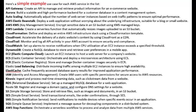Here's a simple example use case for each AWS service in the list. API Gateway: create an API to manage and retrieve product information for an e-commerce website. Aurora: build a scalable and high-performance backend for a customer database in a content management system.